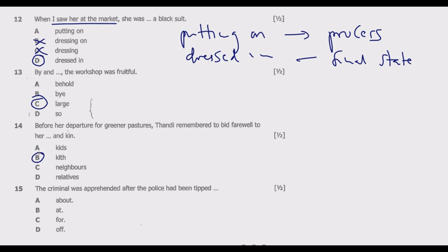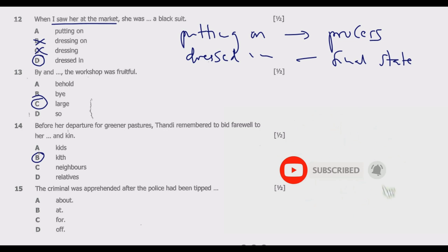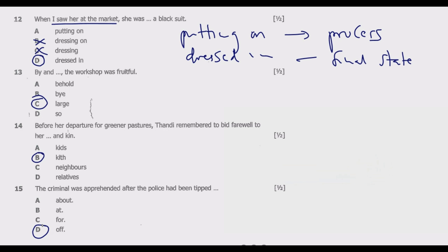Question fifteen: 'The criminal was apprehended after the police had been tipped ___ about his whereabouts.' Options: A: on, B: at, C: for, D: off. This is a common phrase, so D is the correct answer — 'tipped off.' The phrase 'tipped off' is commonly used to refer to the act of providing someone with confidential or insider information. Hence D is the correct answer.